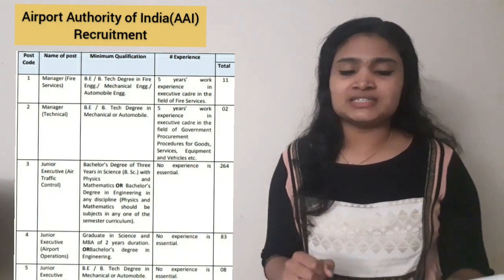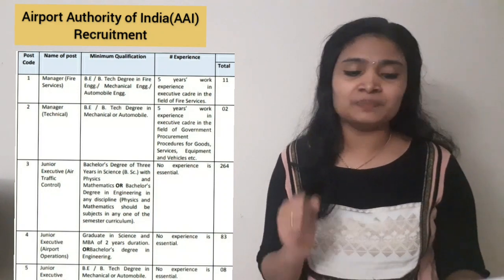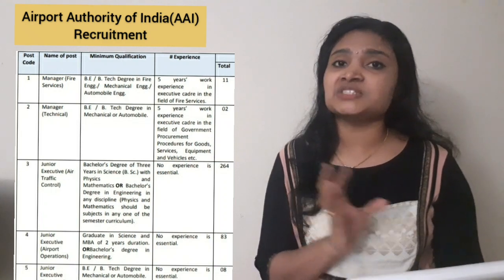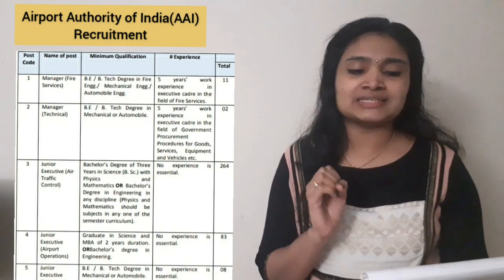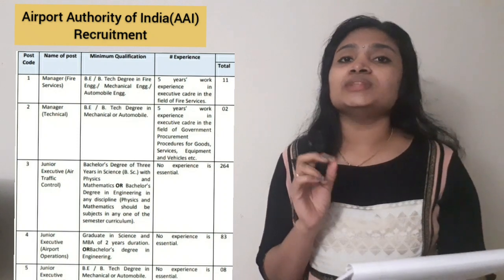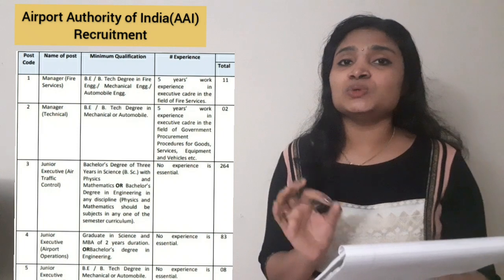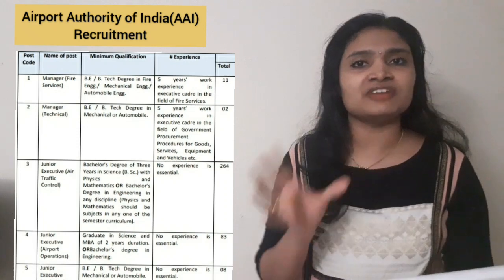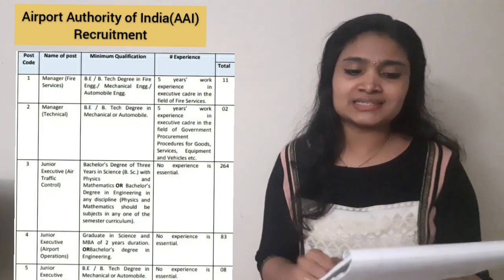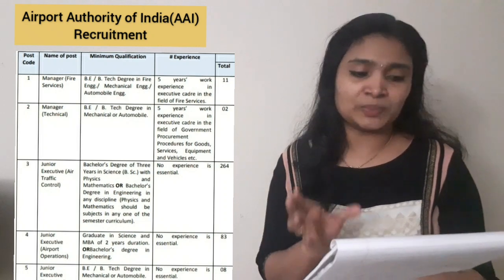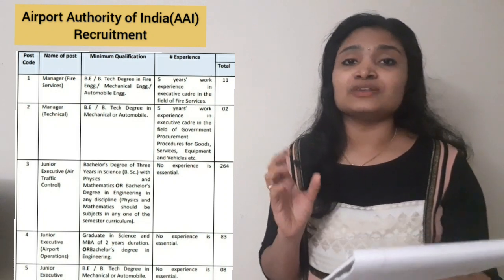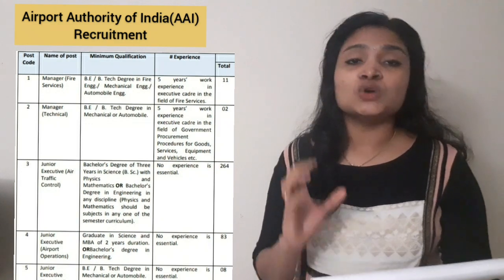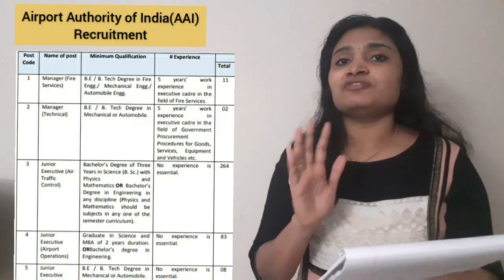Now, let's look at the post details for the Airport Authority of India recruitment. There are five posts: first, Manager Fire Services with 11 vacancies; second, Manager Technical with 2 vacancies; third, Junior Executive Air Traffic Control with 264 vacancies — which is a very big recruitment; fourth, Junior Executive Airport Operations with 83 vacancies; and fifth, Junior Executive Technical with 8 vacancies.